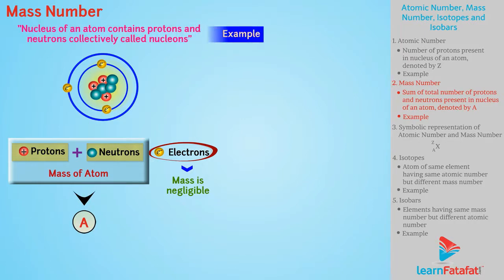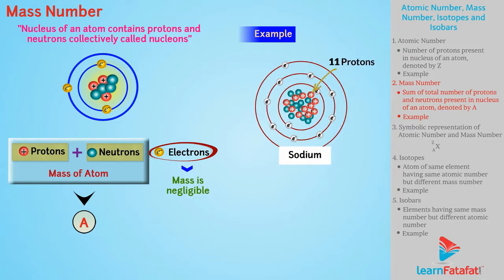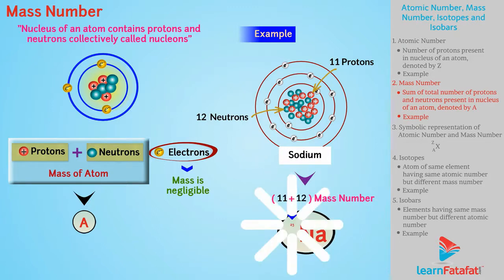For example, sodium has 11 protons and 12 neutrons. Hence, mass number of sodium is 23.